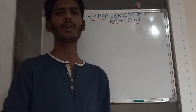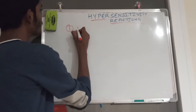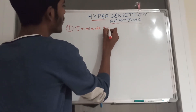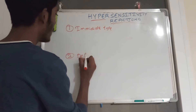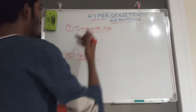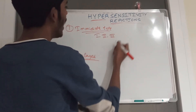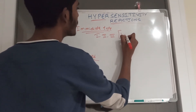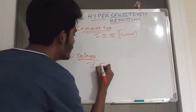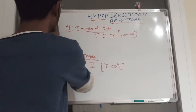Hypersensitive reactions are classified into two types: immediate type and delayed type, based on duration. Immediate hypersensitive reactions include Type 1, Type 2, and Type 3, and these are mediated by humoral immunity. Delayed type includes Type 4, which is mediated by T cells.